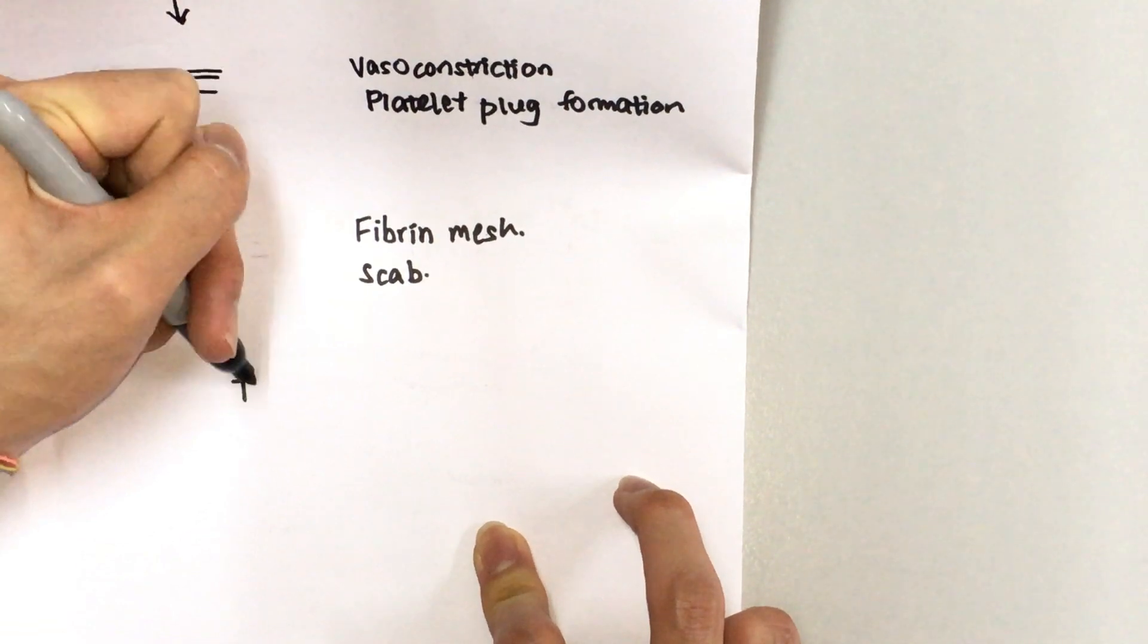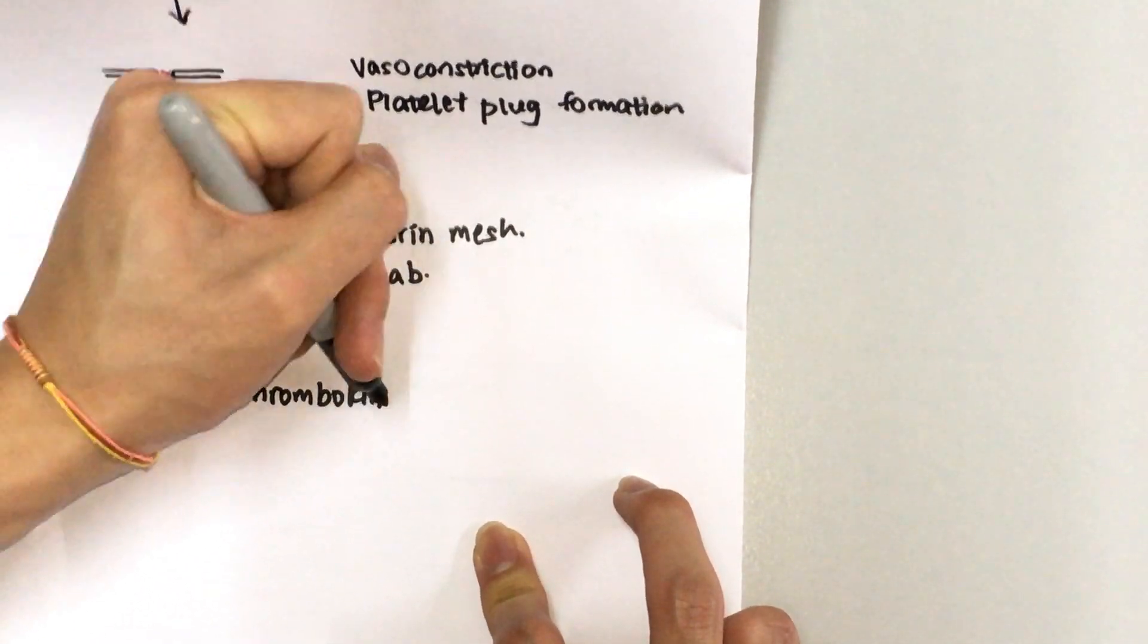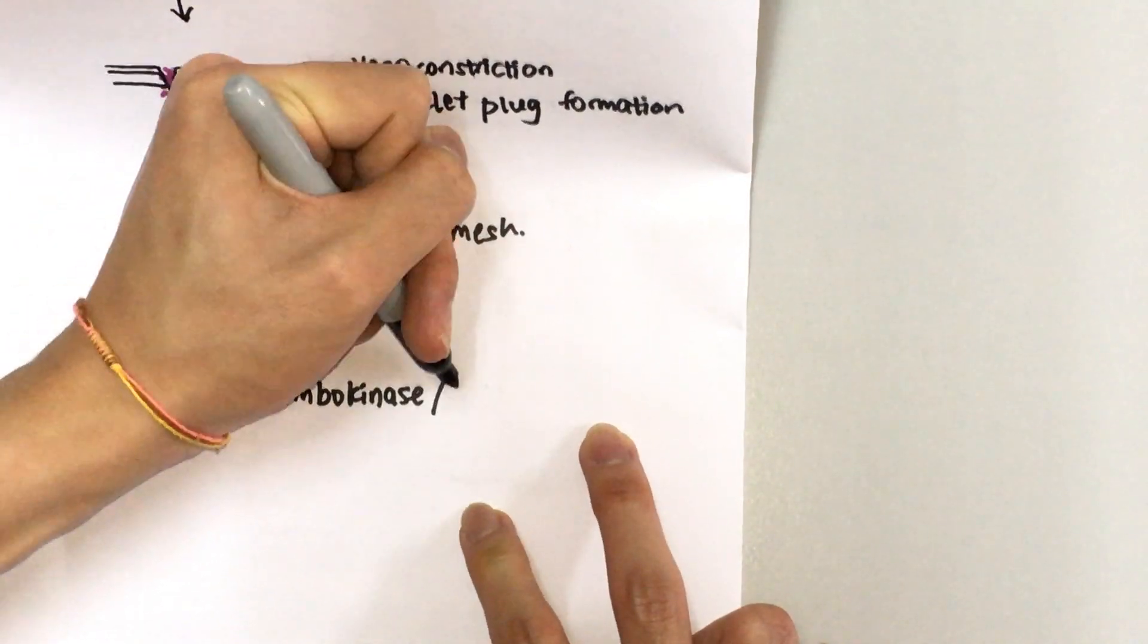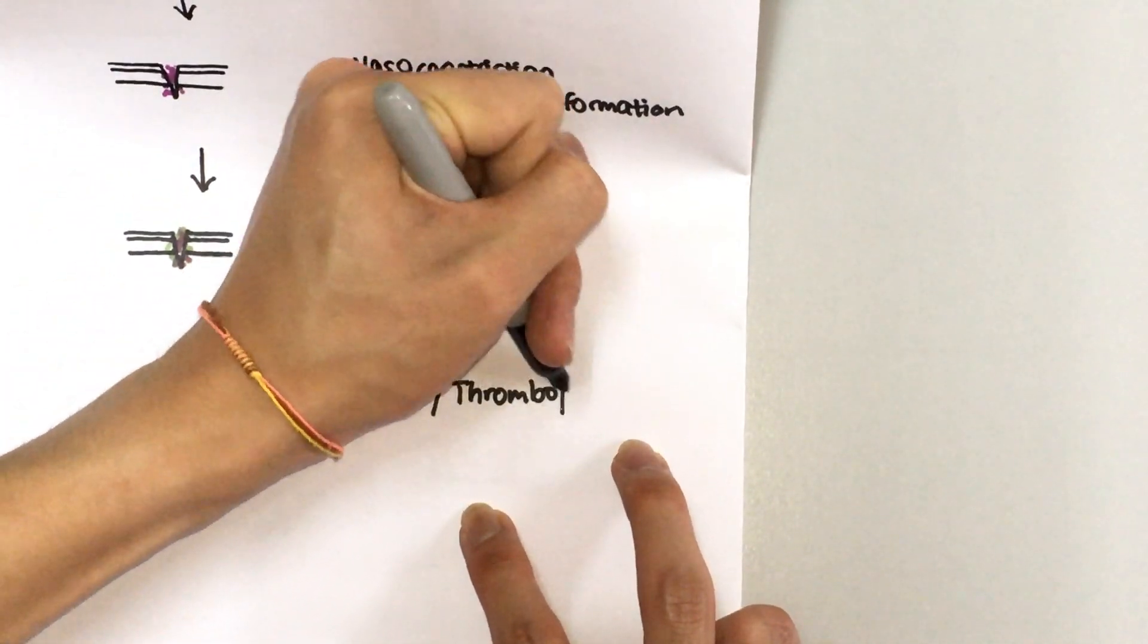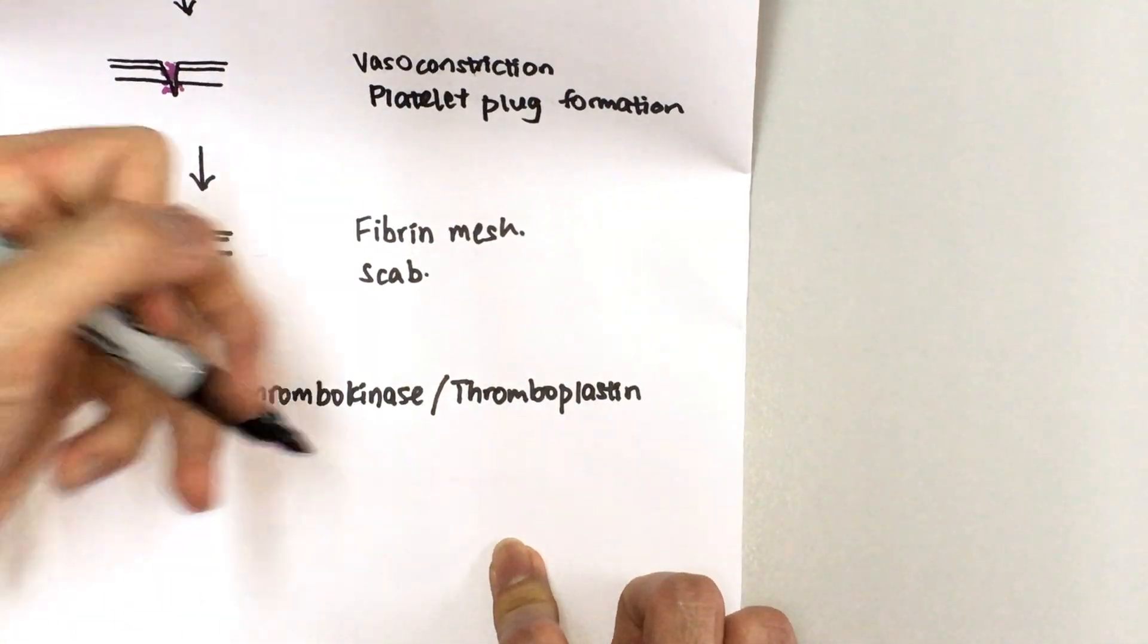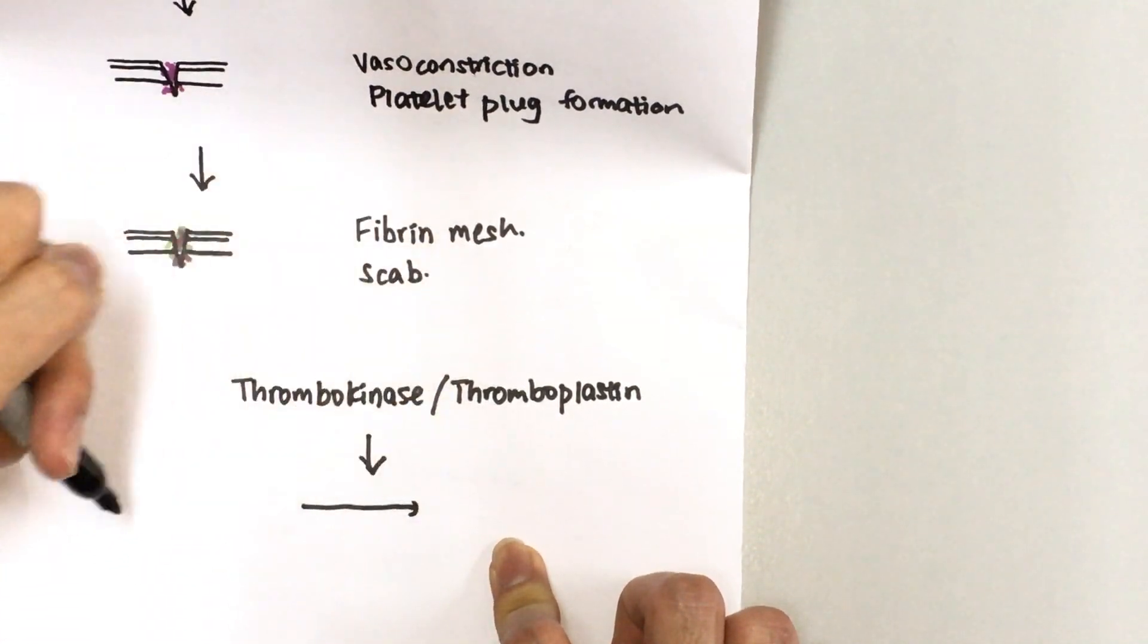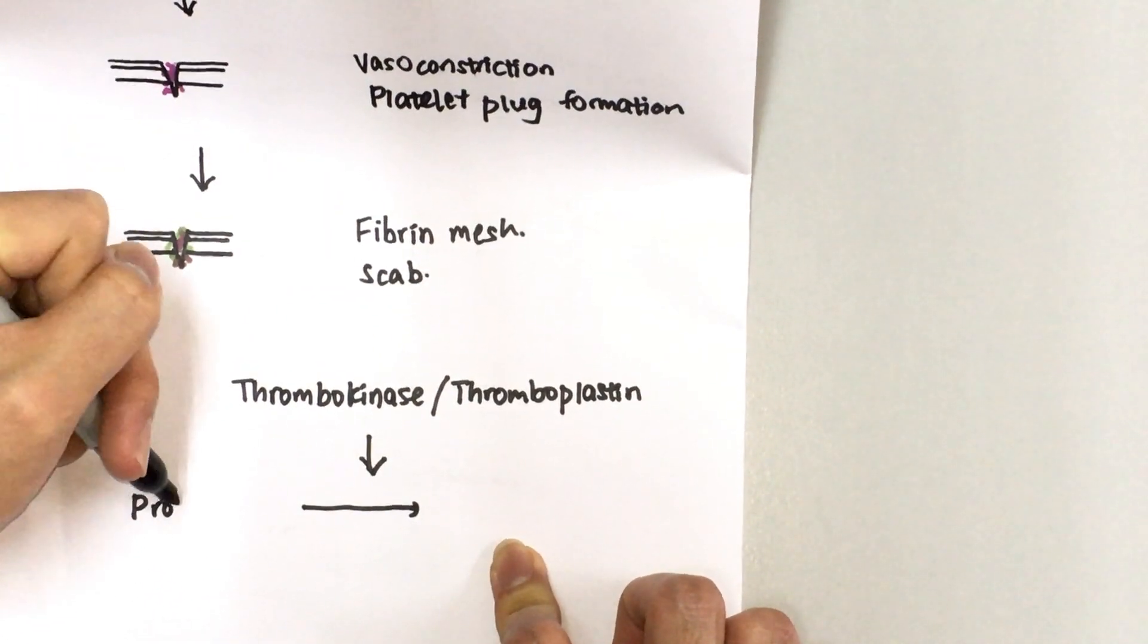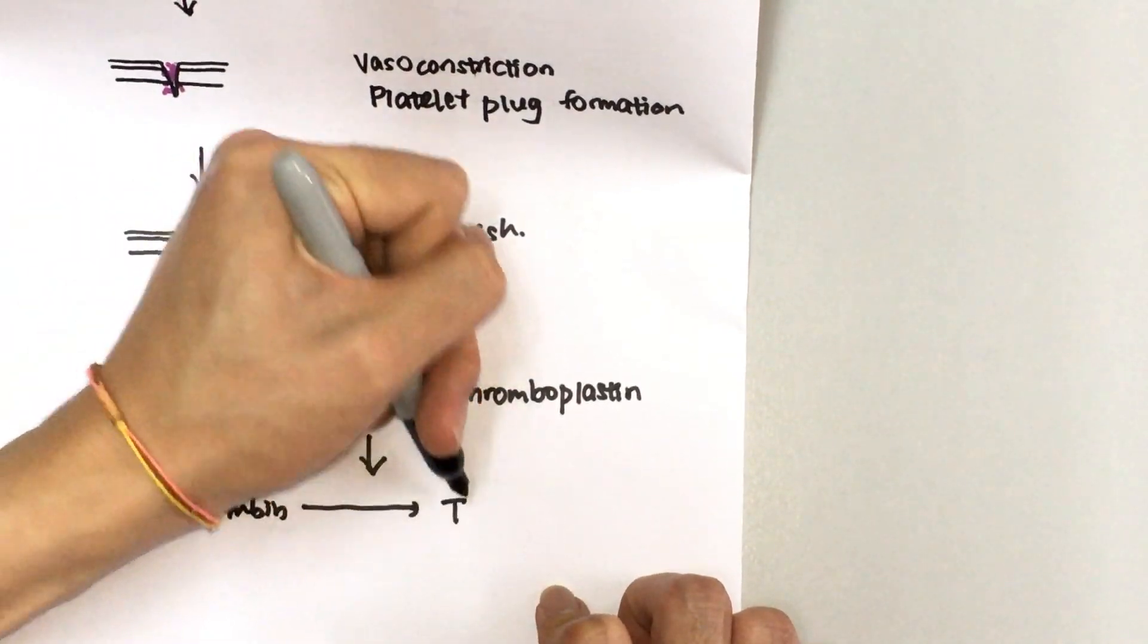to be released. It's called thrombokinase, or you might have heard of thromboplastin. So what this does is it would convert prothrombin into thrombin.